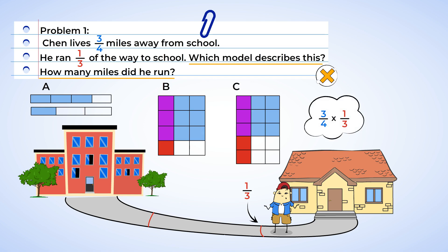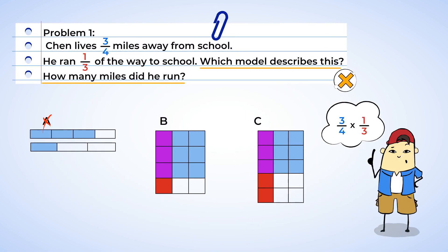And this means that the correct model is the one that shows multiplication. Well, here we have both models B and C showing multiplication. Since we are multiplying fourths and thirds, the rows and columns need to be in thirds and fourths. So it looks like model C has one, two, three, four, five rows. And we're not multiplying by fifths, so that would mean the correct model is B.